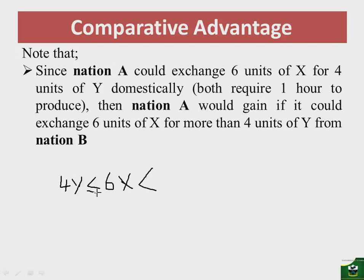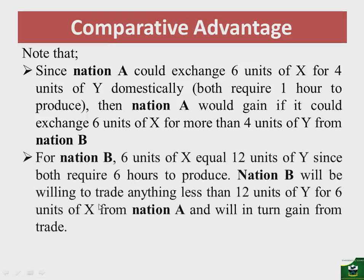To get the upper boundary, we analyze what happens with nation B. For nation B, six units of X will equal 12 units of Y since both require six hours to produce. This means nation B will be willing to trade anything less than 12 units of Y for six units of X from nation A.